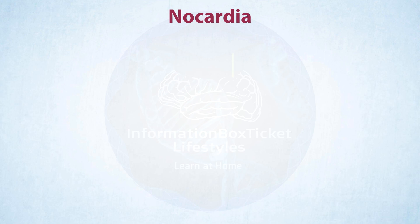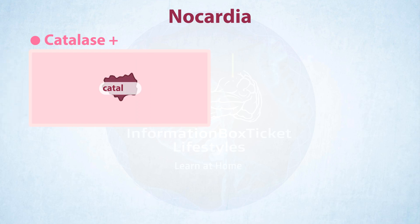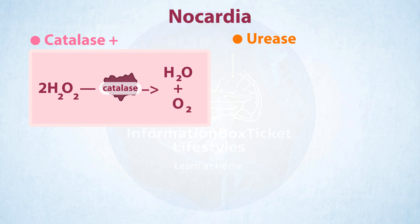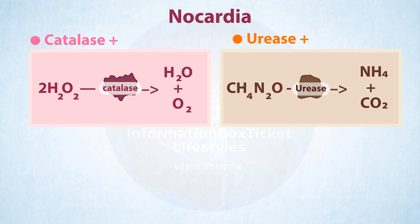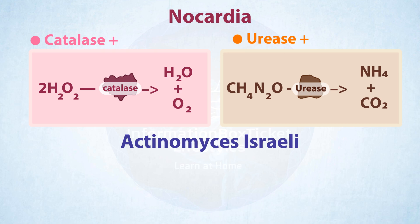Another distinction is that Nocardia is catalase-positive, which means it produces an enzyme called catalase that converts hydrogen peroxide to water and oxygen, as well as urease-positive, which means it produces an enzyme called urease that breaks down urea into ammonia and carbon dioxide, whereas Actinomyces israelii is both catalase and urease-negative.